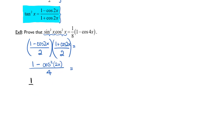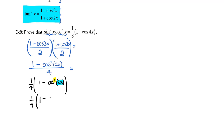Next, I'm going to pull the 1 fourth out front, and that will give me 1 minus cosine squared of 2x. Remember, when I use the power lowering formulas, the angle gets doubled. So in this case I have 2x as my angle, which means when I lower this power — this cosine squared — I will have a 4x. Substituting my power lowering formula in, I will have 1 plus cosine of 4x over 2.